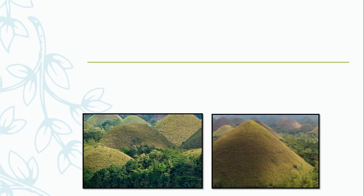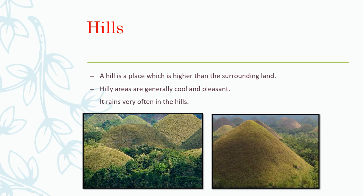Now, the next land. Yes, you are correct. As it is shorter than mountains, they are hills. What are hills? A hill is a place which is higher than the surrounding land. Hilly areas are generally cool and pleasant. It rains very often in the hills. Because of this, the houses on the hills have sloping roofs to let the rain water fall away easily.